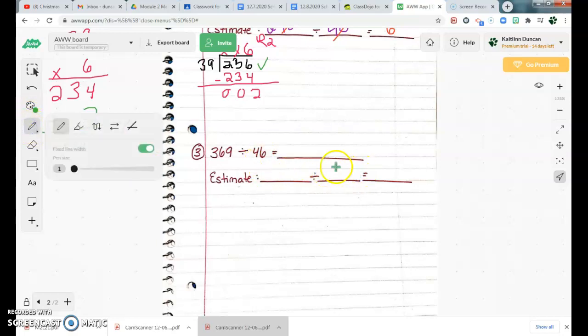I'm going to start by estimating. I'm going to round that 46 to 50. Okay? I know that 5 can go into 35, so I'm going to round that 369. I'm going to round it to 350. Okay? Now I need to cross out the zeros that they share. Boom, boom. 35 can go into 5 seven times, so my quotient is going to be around 7.